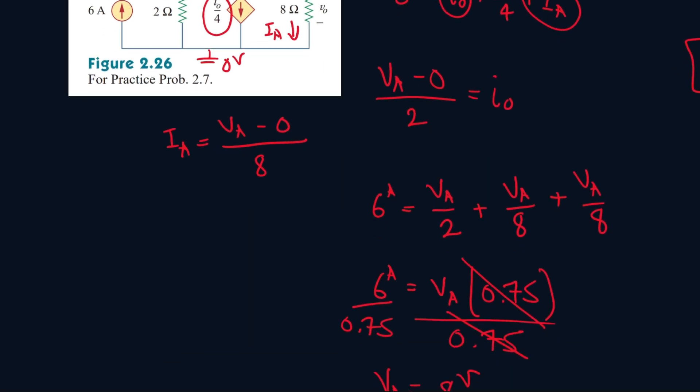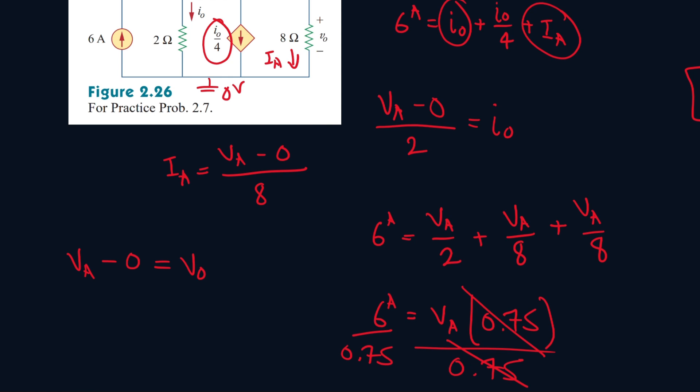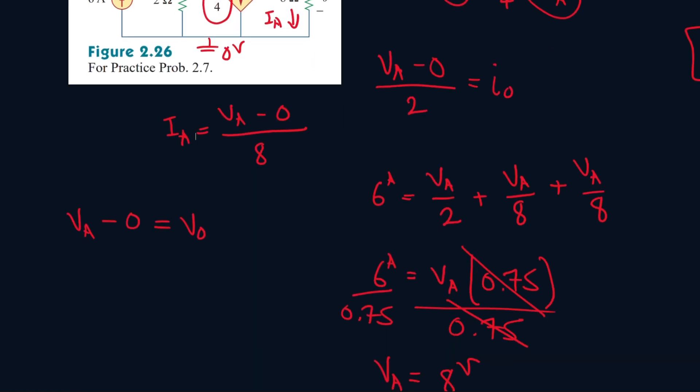So recall, VA, it goes from a high potential to a low potential. So VA to 0. This is equal to V0. And V0 is equal to IA times 8, right? So V0 is equal to IA times 8.